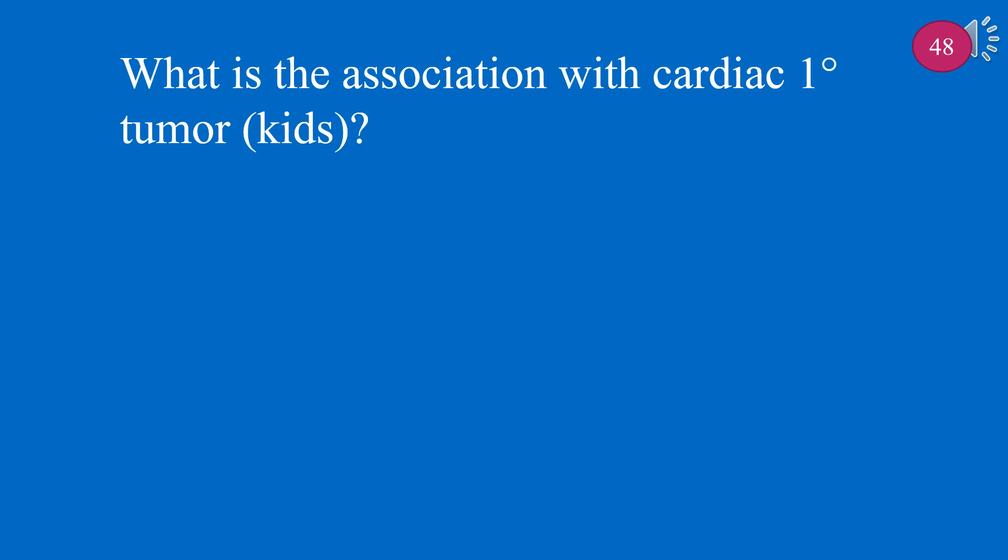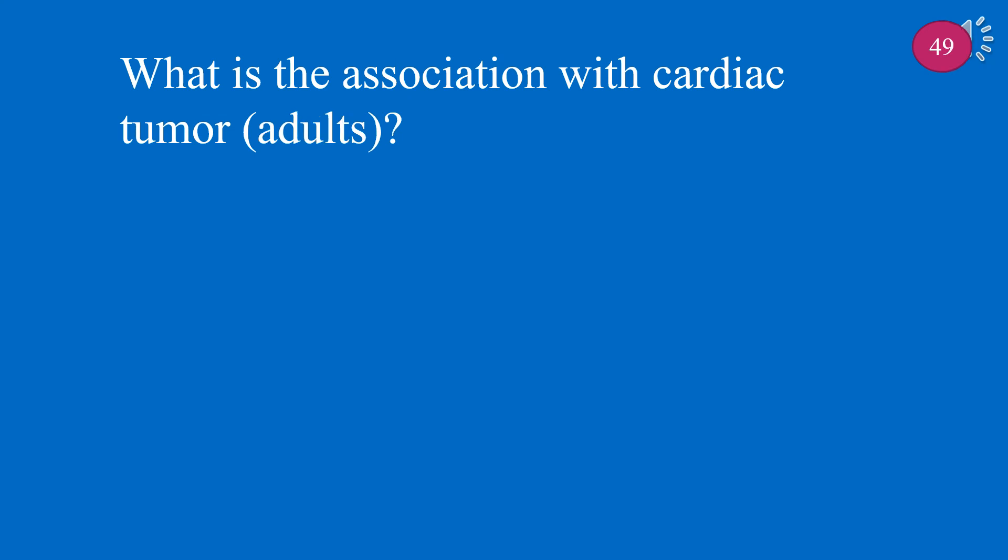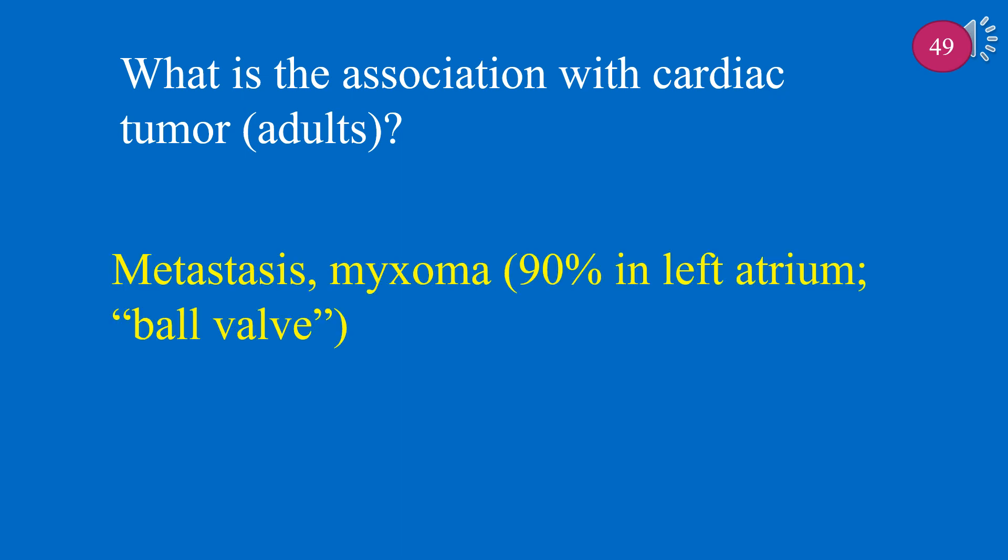What is the association with cardiac primary tumor in kids? Cardiac primary tumor in kids is associated with rhabdomyoma, often seen in tuberous sclerosis. What is the association with cardiac tumor in adults? Cardiac tumor in adults is associated with metastasis, and myxoma — 90% in left atrium, ball valve.